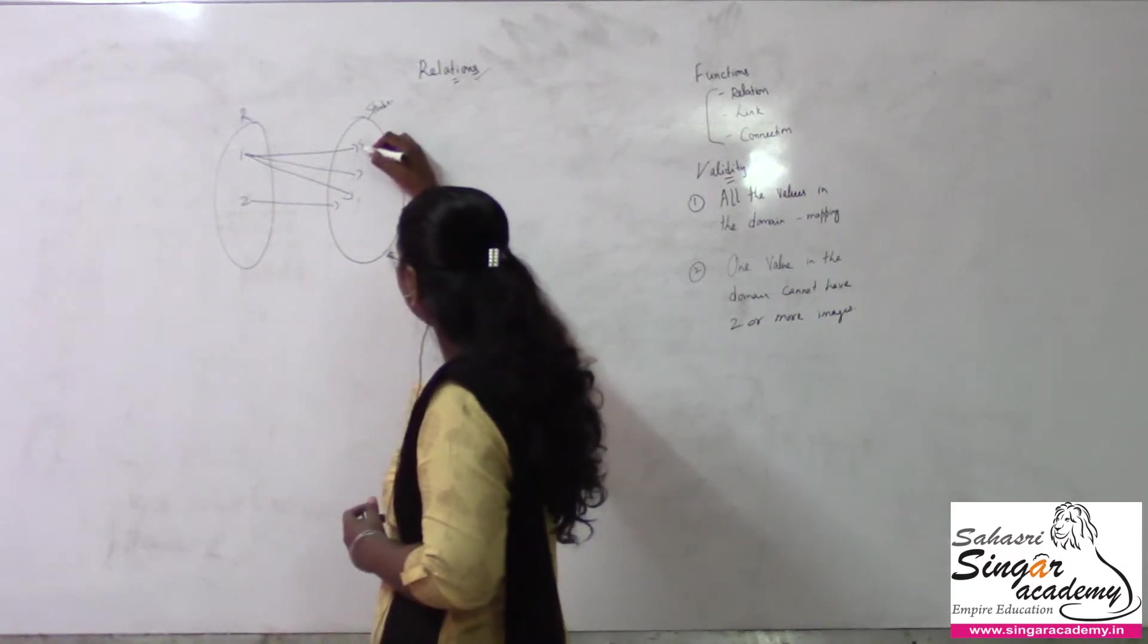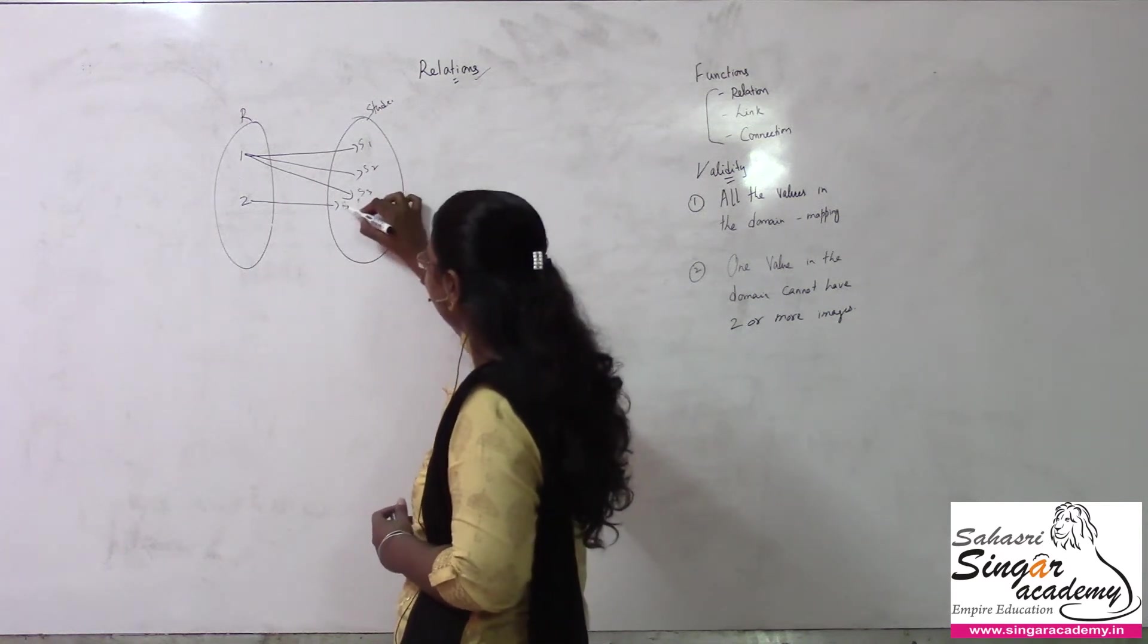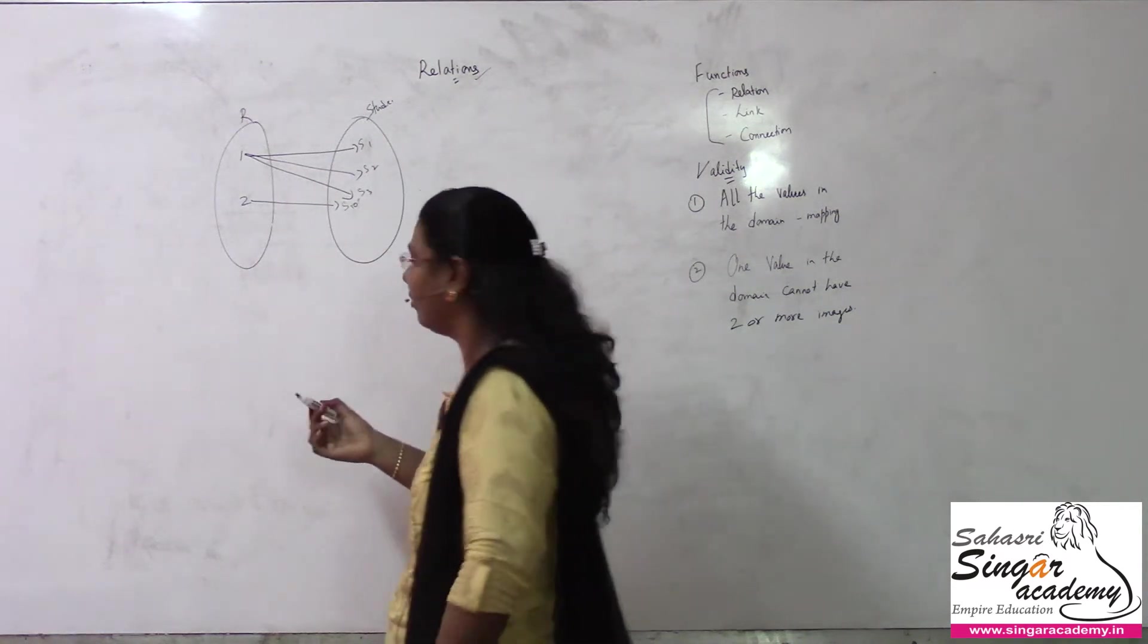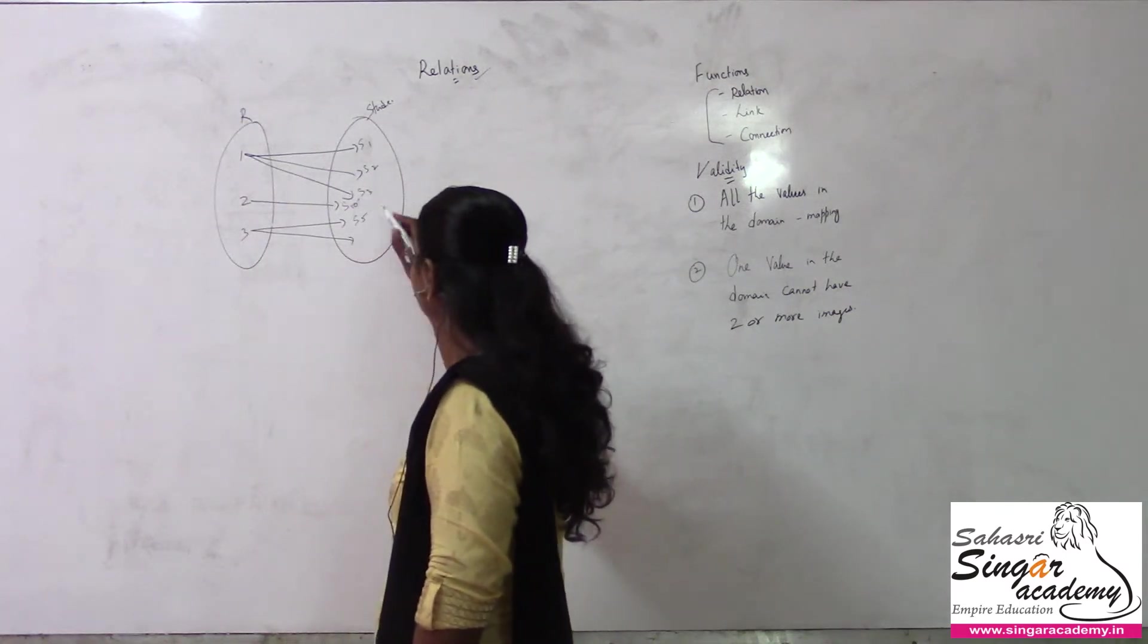But can we define this as a function? See, first rank may be given to three students, second rank to one student - let me name these as student one, student two, student three. Second rank is given to the tenth student. Third rank is given to two students.